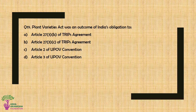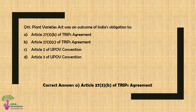Question No. 19: Plant Varieties Act was an outcome of India's obligation to which agreement or convention? Option A: Article 27.3(b) of TRIPS Agreement, Option B: Article 27.3(c) of TRIPS Agreement, Option C: Article 3 of TRIPS Agreement. The correct answer is Option A — Article 27.3(b) of the TRIPS Agreement.